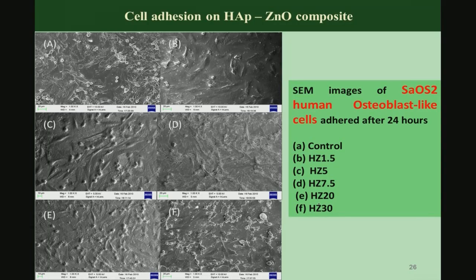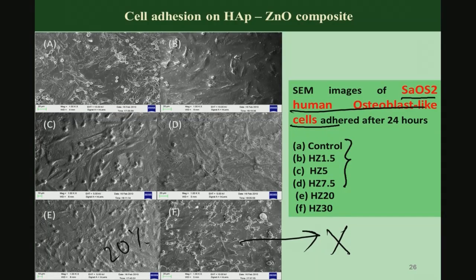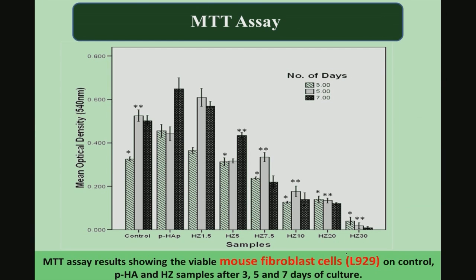The same observation was seen using osteosarcoma cells — human osteoblast-like cells. At 1.5, 5, and 7.5 percent materials, typical cellular morphology is shown. At 20 percent it is still acceptable, but 30 percent is certainly not good. Thirty percent zinc oxide does not show any good cell response properties, as reflected in the MTT assay results.